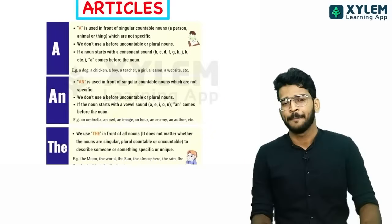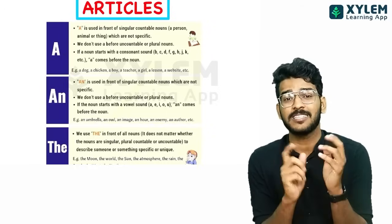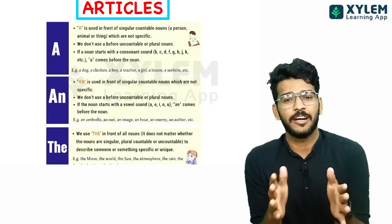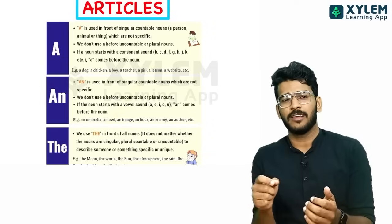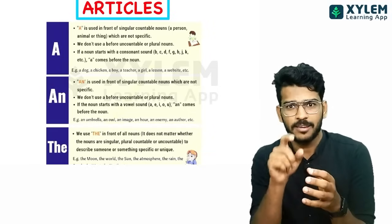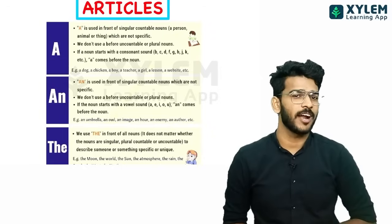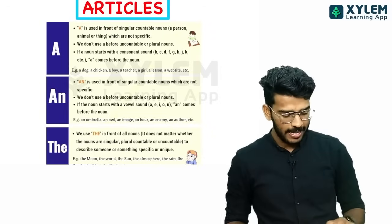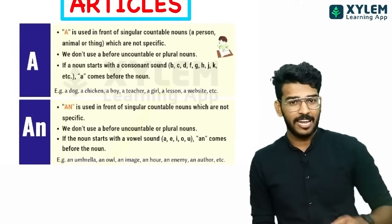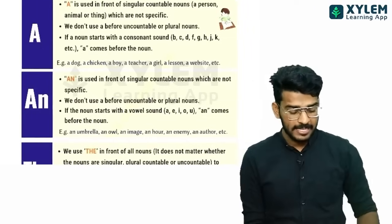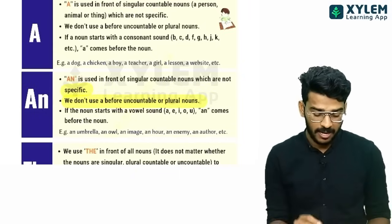The next one is the articles. The article is very easy — it is called 'a' and 'the'. If you pronounce it all in a vowel sound, it is called 'an'. 'A' is used in front of a singular countable noun. According to the rule, if a noun starts with a vowel sound, we use 'an'. We don't use 'a' or 'an' for uncountable or plural nouns.